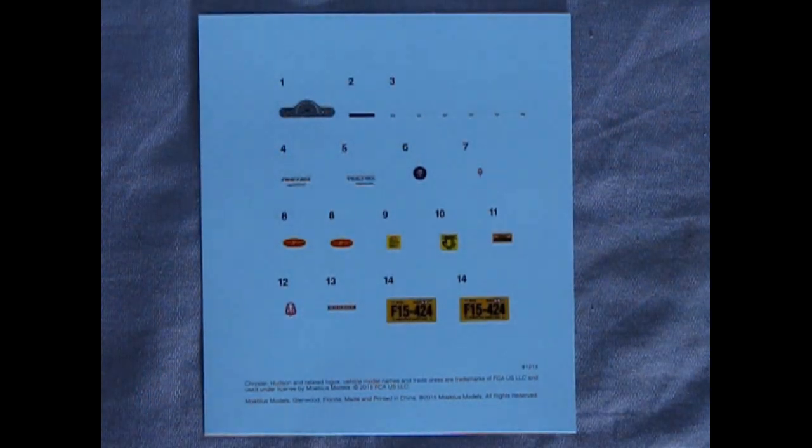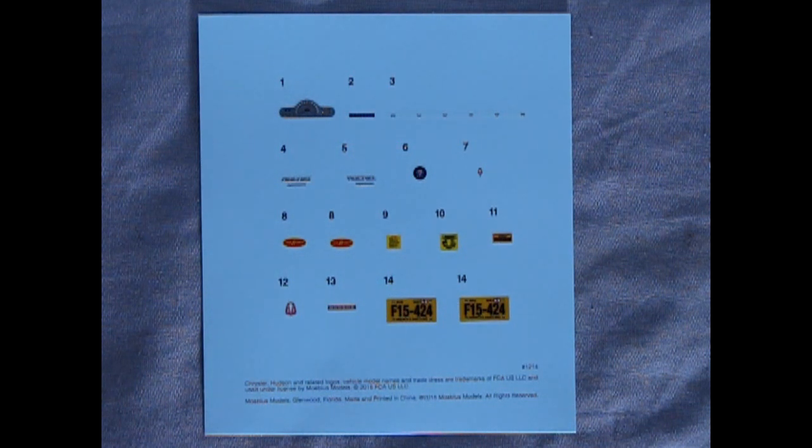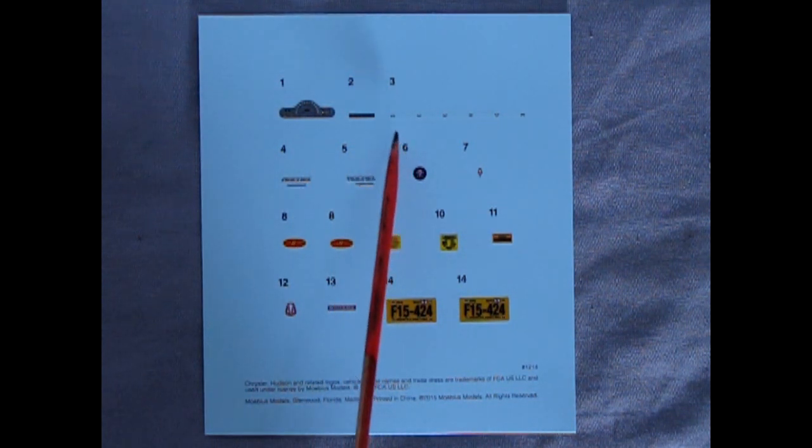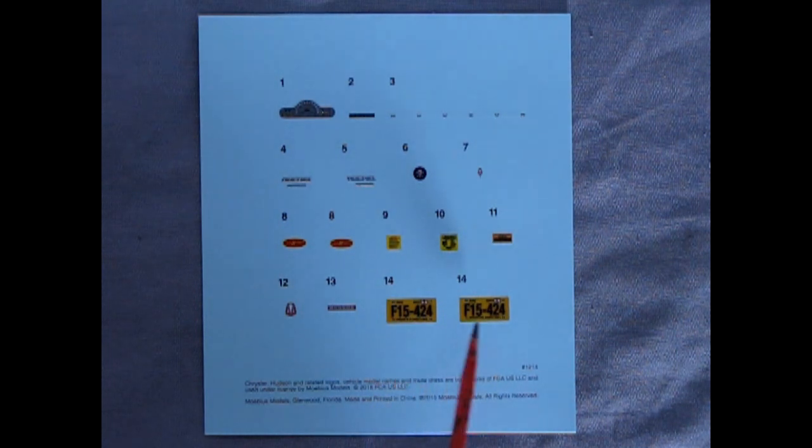Finally we have our decal sheet and if you peel off the paper you can see the amazing items on here. We have our instrument panel, all the little emblems as well as our license plates.